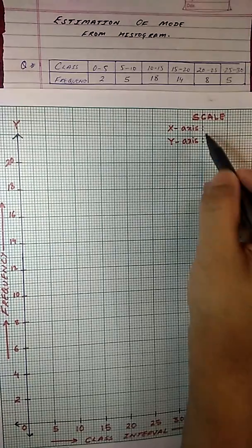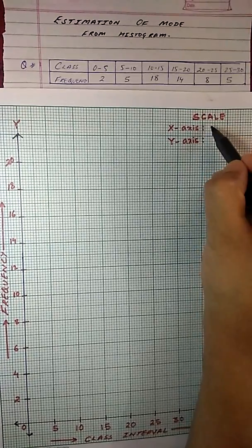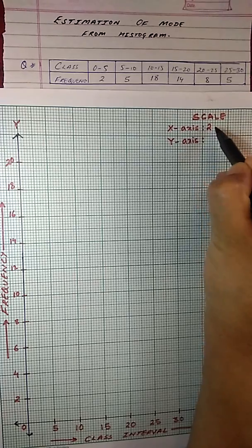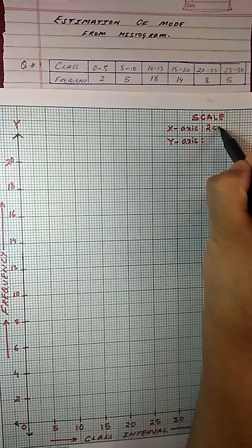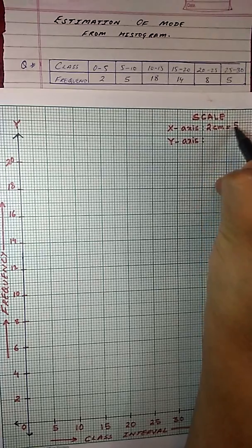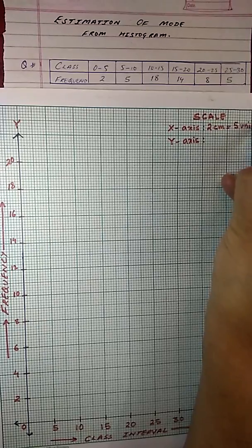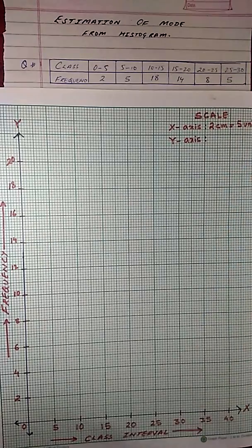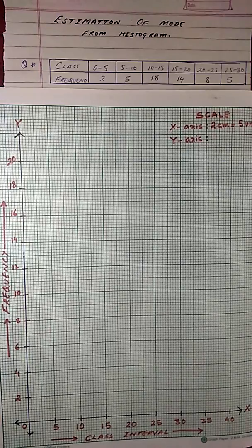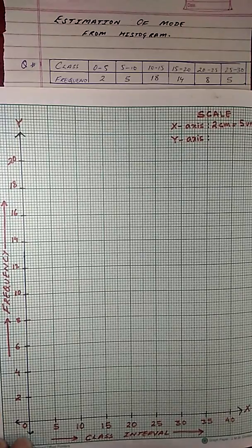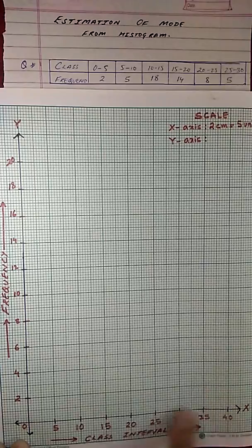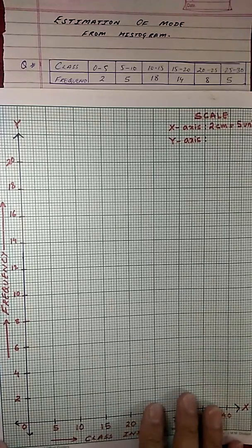In the scale on top, I am writing x-axis I have taken 2cm equals to 5 units. Now I have done that keeping in mind the range of the size such that my graph is neat and clear.